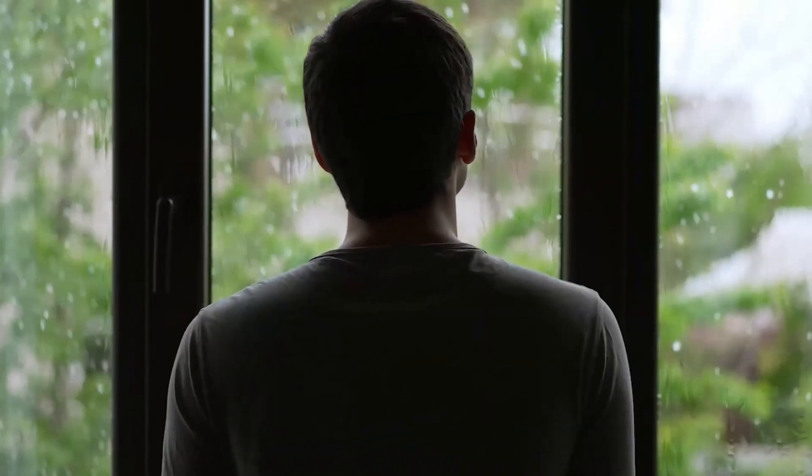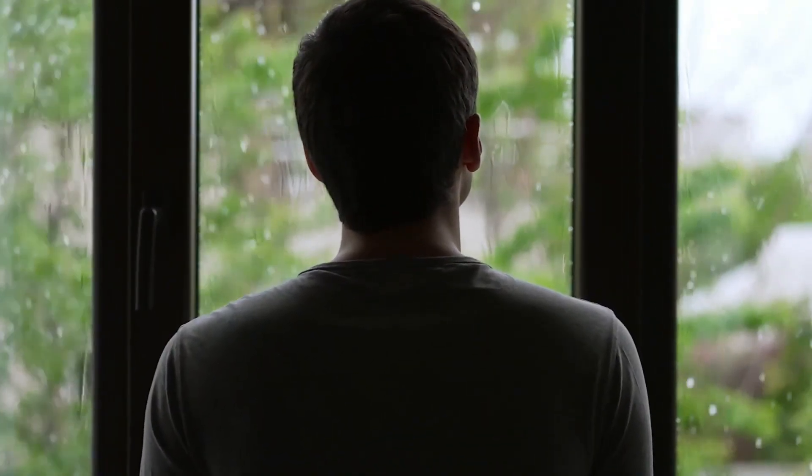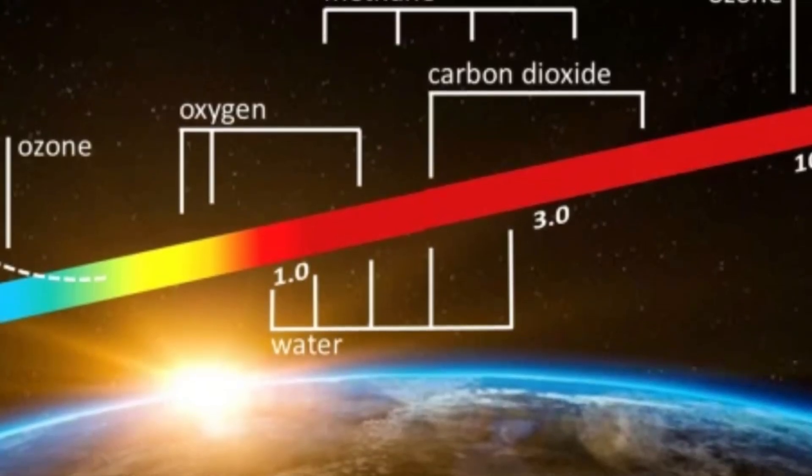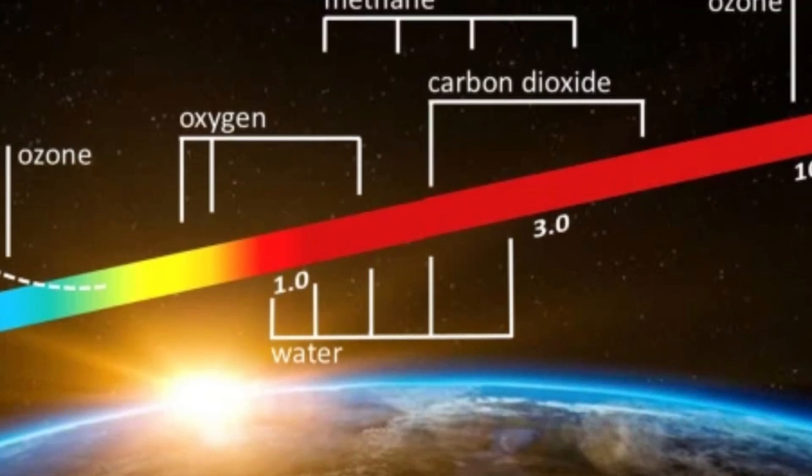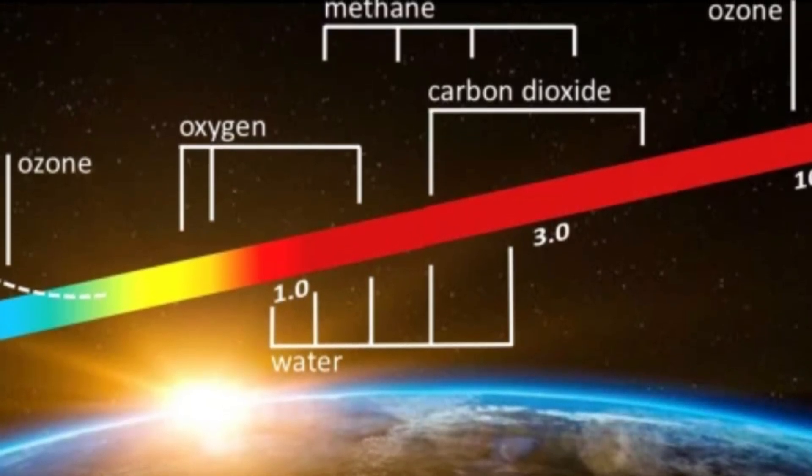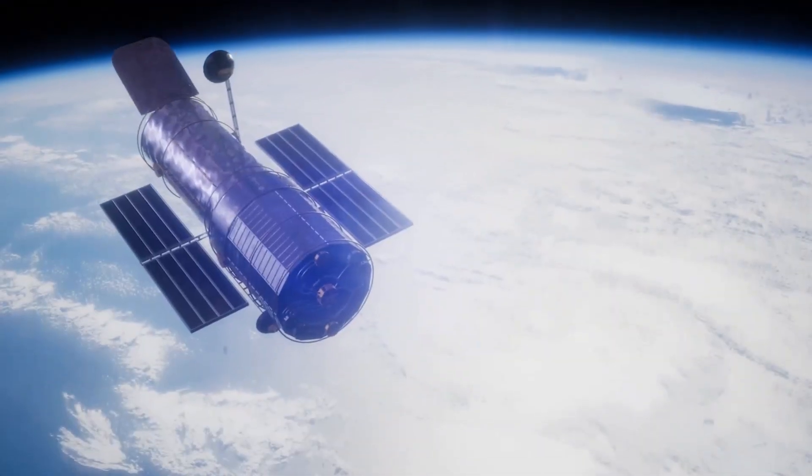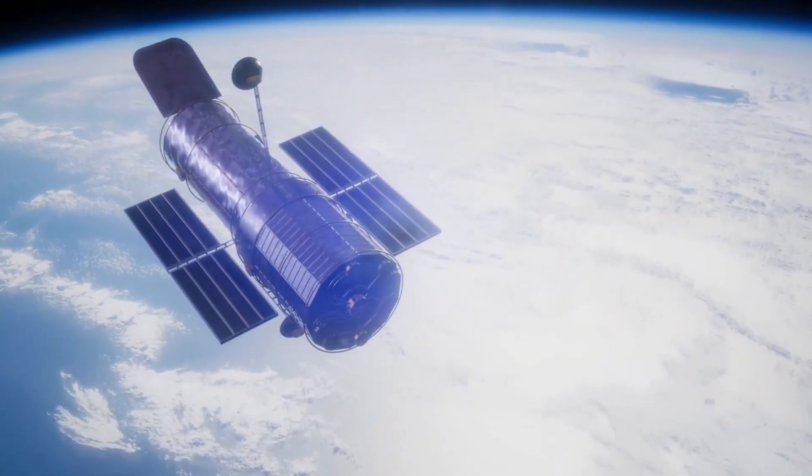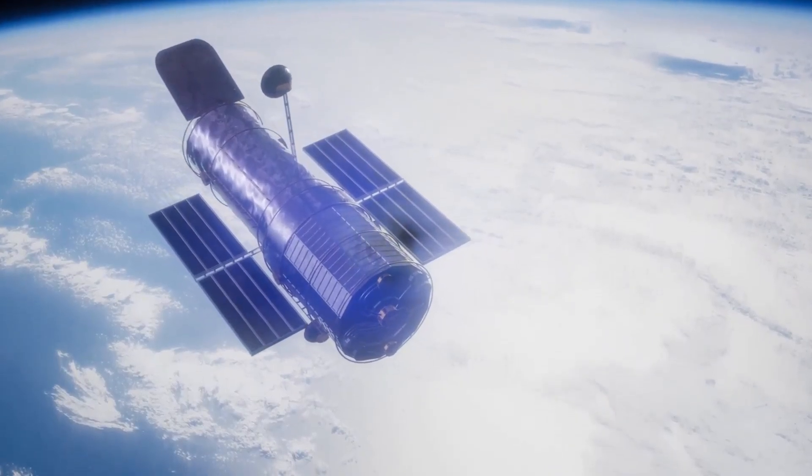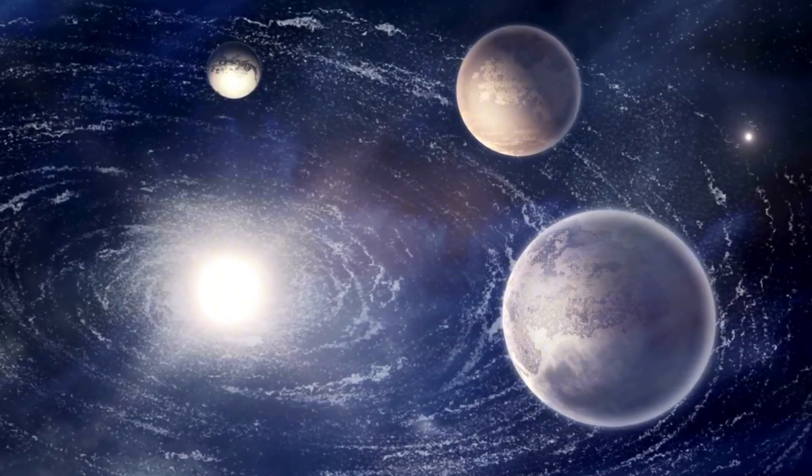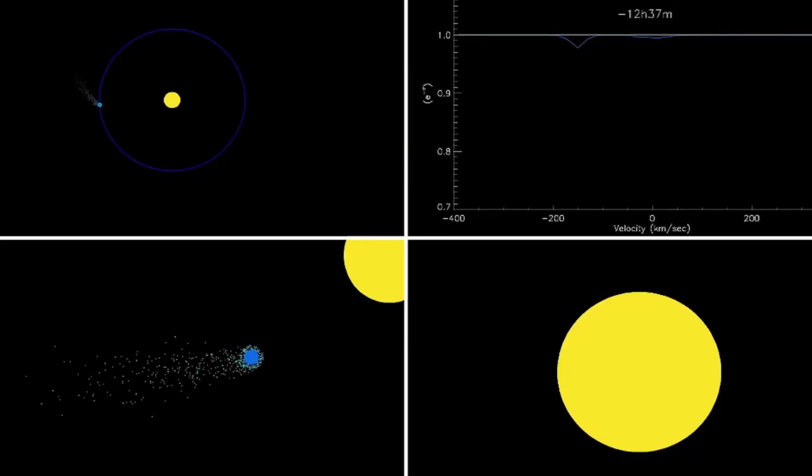And it passes in front of its star from our perspective, allowing us to study its atmosphere in detail. Scientists have detected water vapor, oxygen, and even methane on HD 189733b, which brings up a fascinating question. If a planet this extreme can have some of the basic ingredients for life, what other seemingly impossible places might harbor the potential for living things?